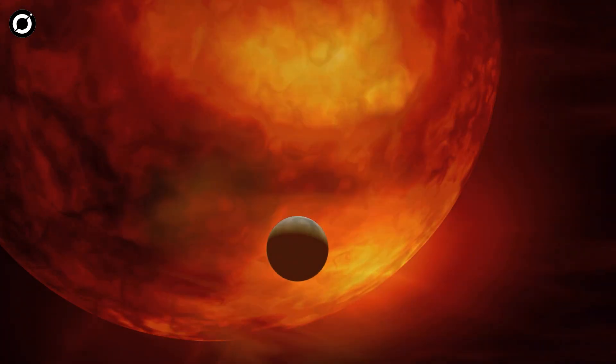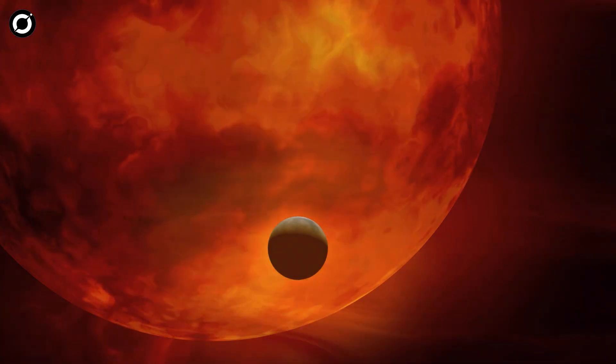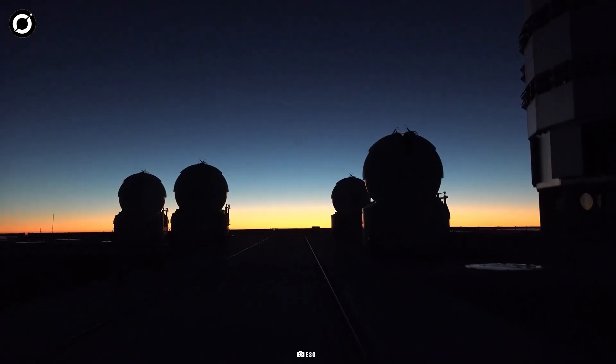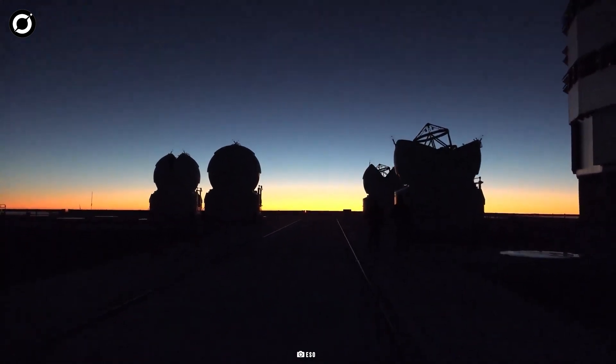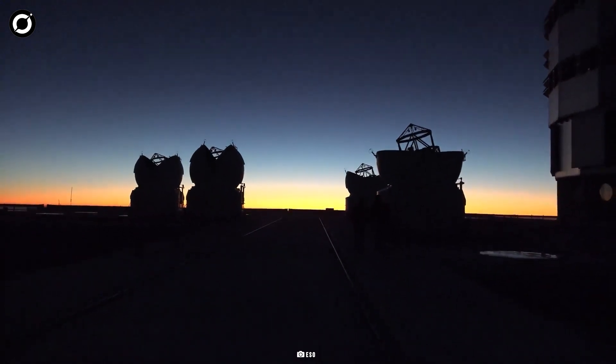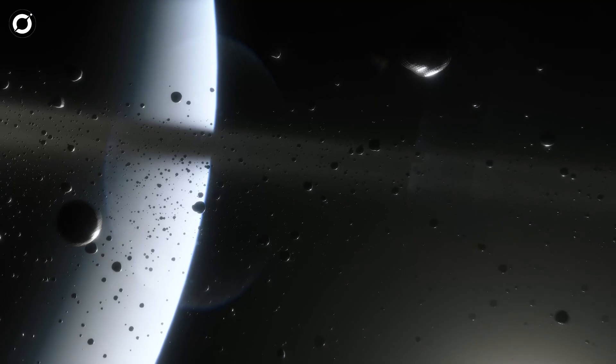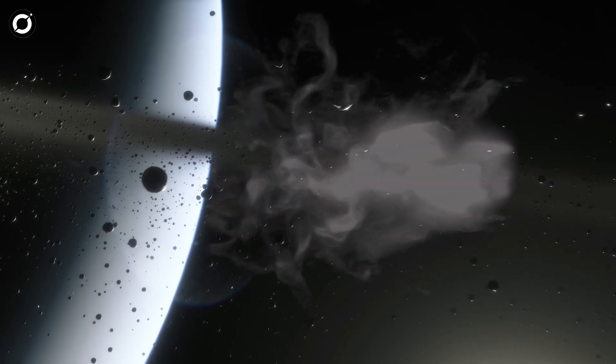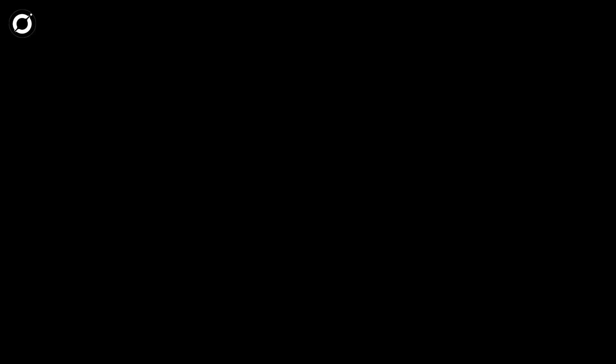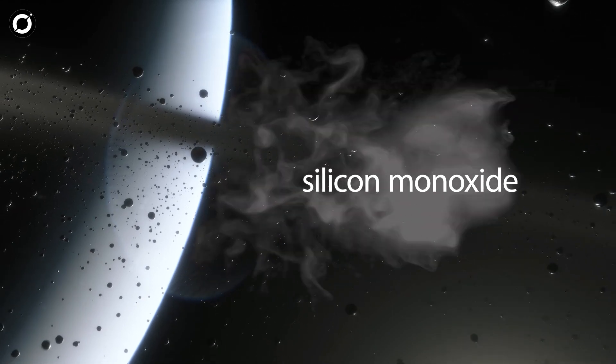But the truth behind Betelgeuse's bizarre behavior turned out to be unexpectedly thrilling. Thanks to high resolution images captured by the MATIS instrument on the European Southern Observatory's Very Large Telescope Interferometer, scientists discovered a shocking culprit: dust. This dust, in the form of silicon monoxide, created a dark veil around Betelgeuse causing it to dim significantly.